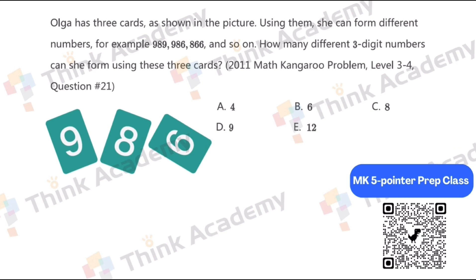Olga has three cards as shown in the picture. Using them, she can form different numbers. For example, 989, 986, and 866, and so on. How many different three-digit numbers can she form using these three cards?